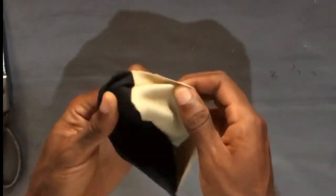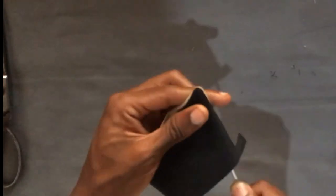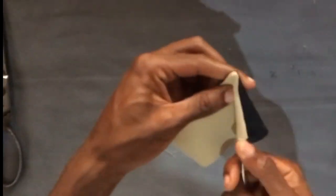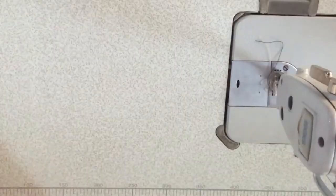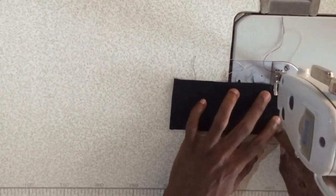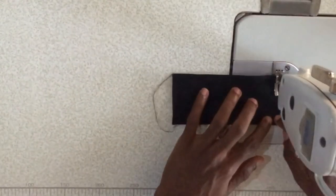Turn the flap out and press. Topstitch the flap about quarter inch from the edge.